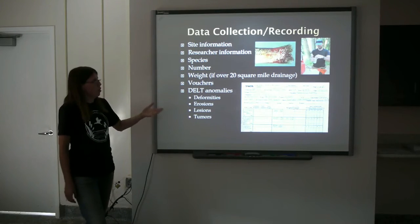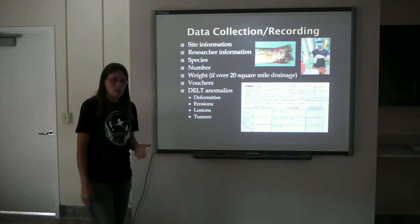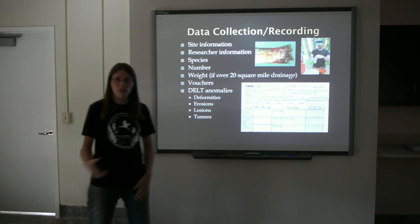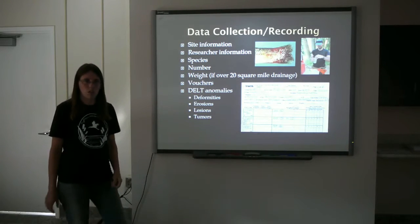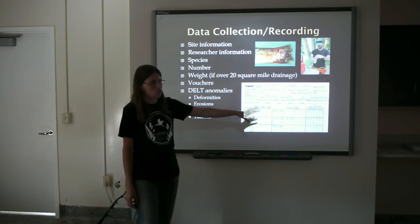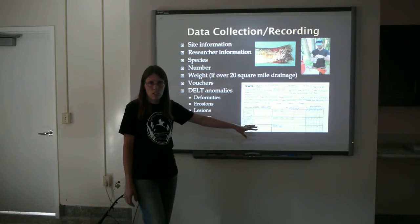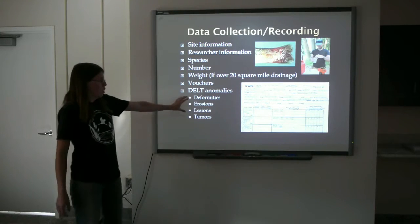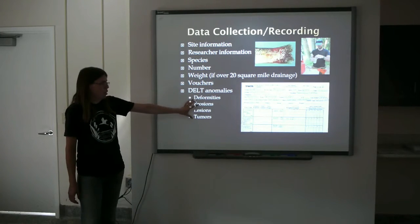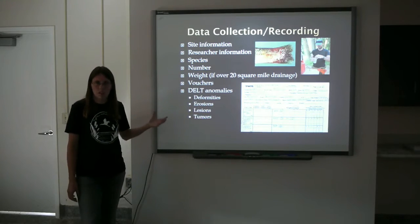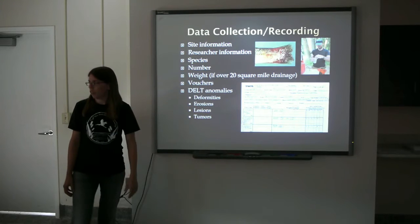You might see a fish with an injury where maybe a turtle bit the fish, or a great blue heron bit the fish, or it had previously been caught on a fishing pole. Those do not get recorded — those are injuries, they're not anything indicating water quality. DELT anomalies are typically something related to water quality, more commonly seen in urban and very industrial areas.